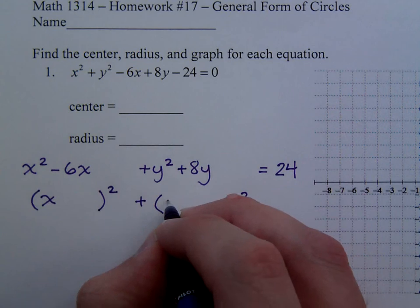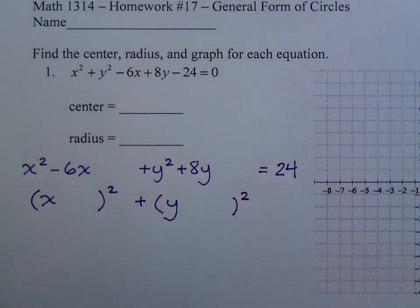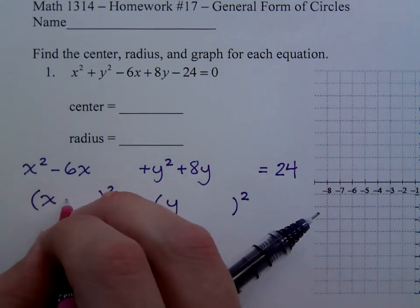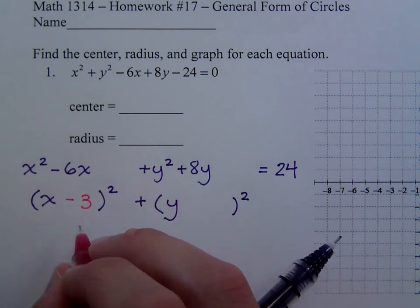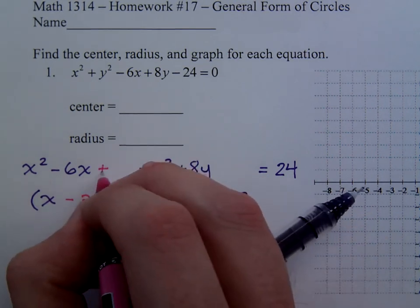So here's x, here's y, let's make it happen. What's half of negative 6? Negative 3. What's negative 3 squared? Plus 9.